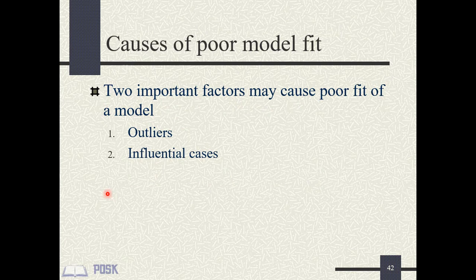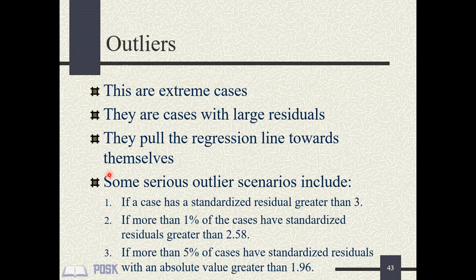When a model does not fit well, this is usually due to two factors: outliers and influential cases. Outliers are observations far away from the regression line, defined as observations with standardized residuals greater than 3. They can adversely affect model fit. Researchers should consider outliers as having serious effects if any single case has a standardized residual greater than 3, if more than 1% of cases have standardized residuals greater than 2.58, or if more than 5% of cases have standardized residuals greater than 1.96.